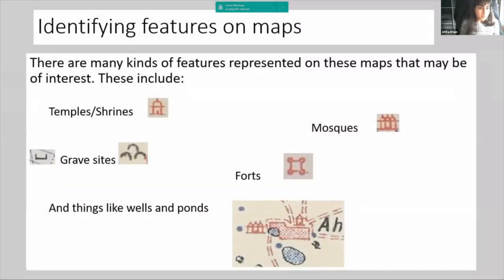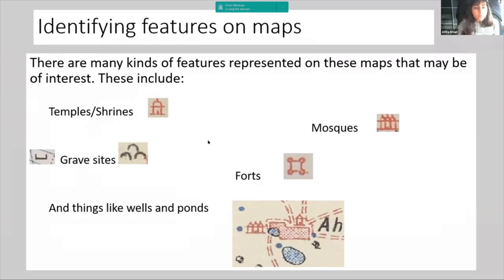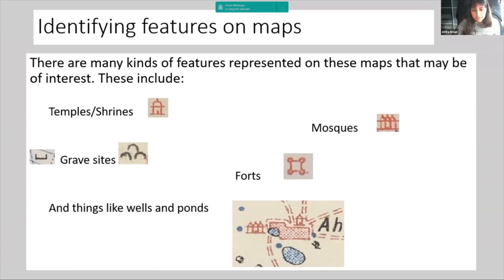There are many features on the maps of interest to us. There are temples and shrines, which don't always indicate which religion — they could be Hindu or Sikh Gurdwaras. The only ones differentiated are mosques, which have a specific symbol. Gravesites can be indicated with two kinds of symbols — one found in later maps, and more commonly mound symbols. There's also the fort symbol found throughout the region, and other features of interest such as wells and ponds. Dried-up ponds can be confused with mounds because they just show solid outline lines, but they're of interest to us as well.